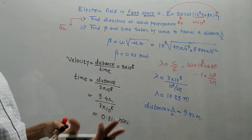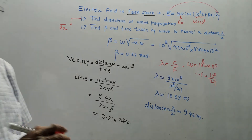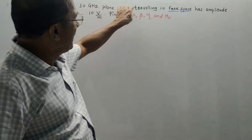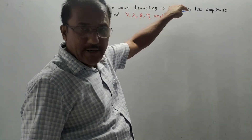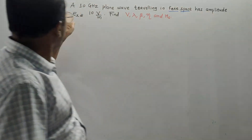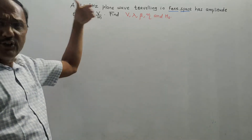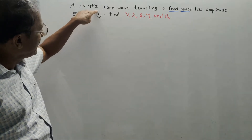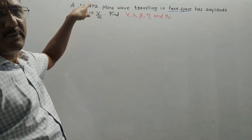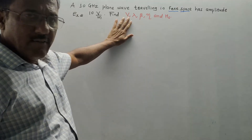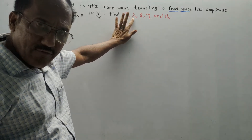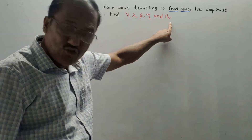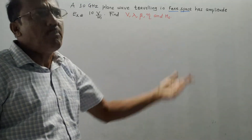Let us solve a different type of numerical. The next problem: a 10 GHz plane wave traveling in free space has amplitude E_x equal to 10 volts per meter. Find V (velocity of propagation), lambda (wavelength), beta (phase shift), eta (intrinsic impedance), and H_0 (amplitude of magnetic field). The frequency is 10 GHz, which is 10 × 10^9 hertz.